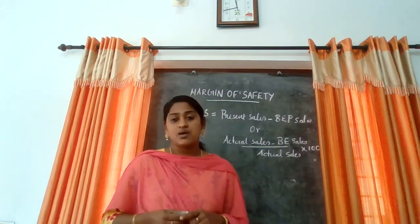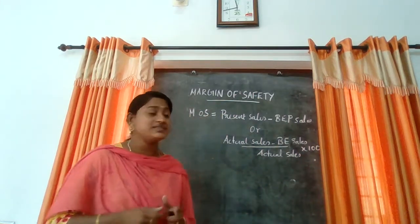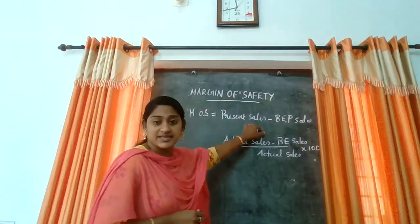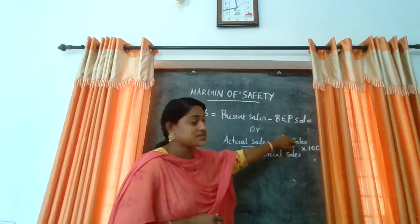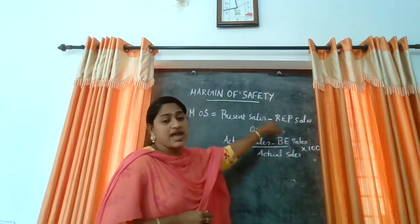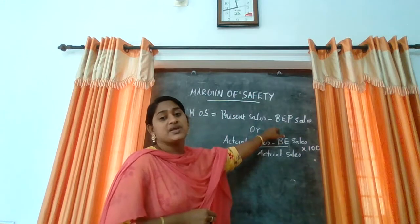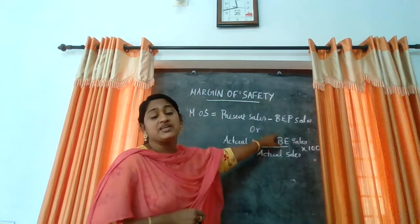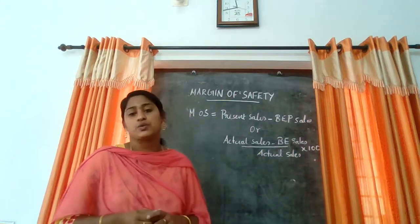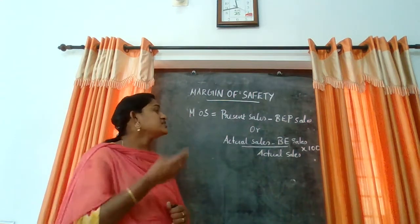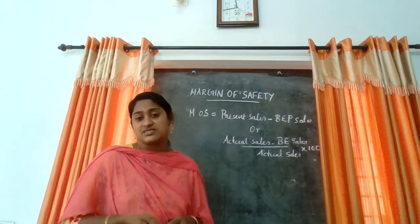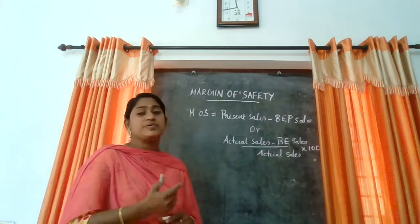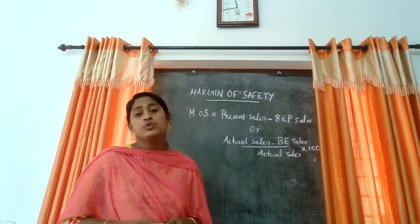Margin of safety is calculated as actual sales minus break-even sales. Break-even sales means the point at which the company has no profit or no loss. If the sales go beyond the break-even sales, it will lead to profit. If the sales are below the break-even sales, it will lead to loss.